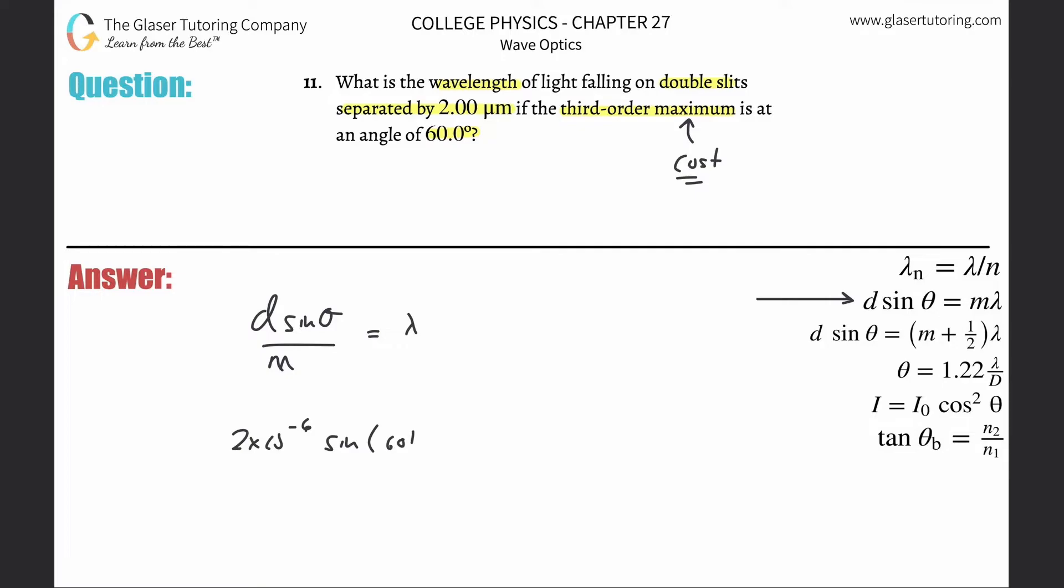Then it's going to be the sine of that angle of 60 degrees, divided by m. So now here it's third order, so m is 3. Be careful if you're dealing with destructive interference in number 9. I gave you instructions of how to think through that.